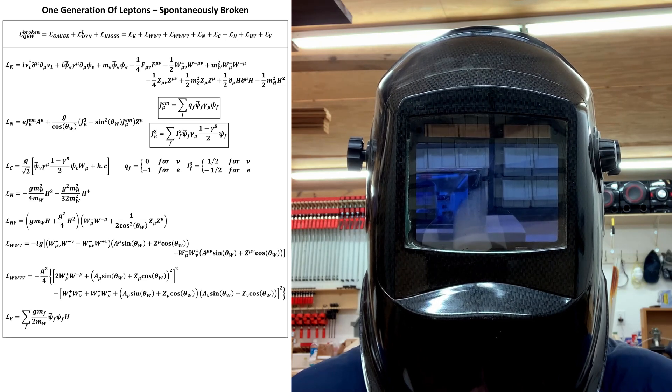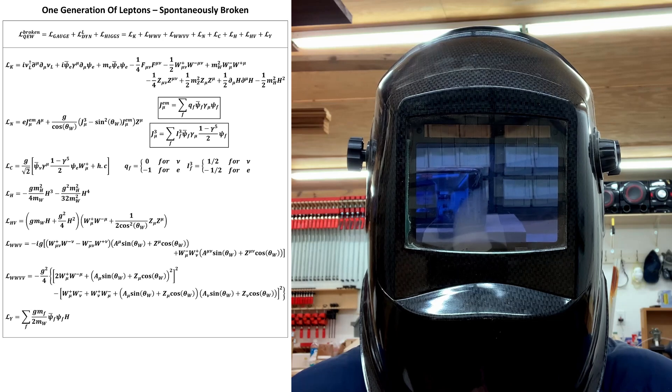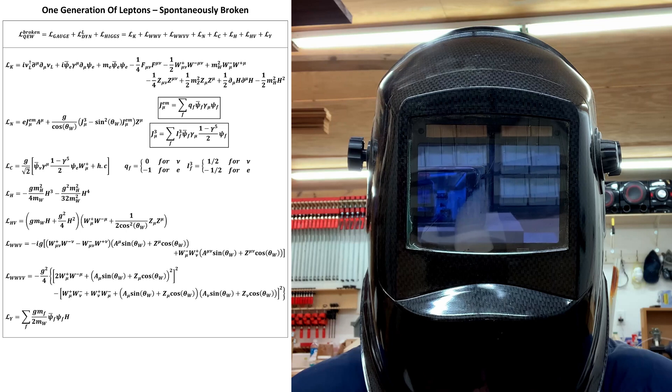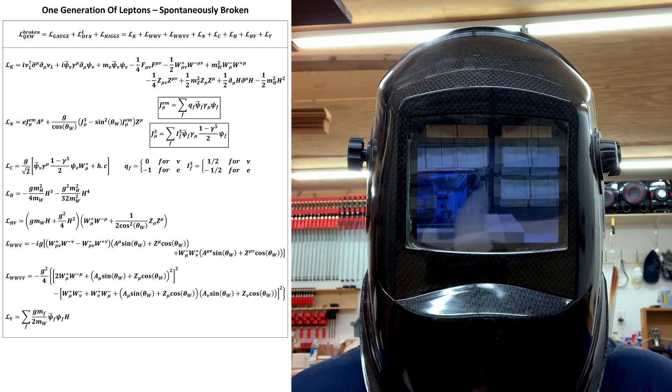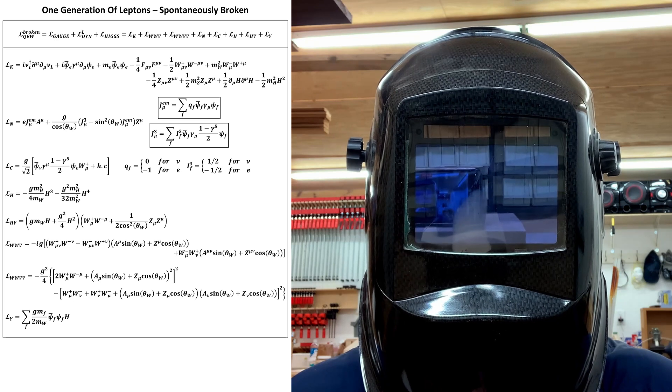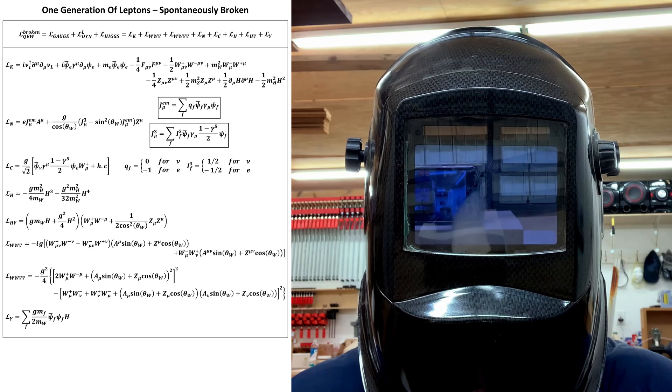Because everything is the same except for the Yukawa couplings and the resulting masses which are both already indexed in the Lagrangian, all we really have to do to include the additional fermion generations is extend the range of the fermion sums to include the additional leptons.